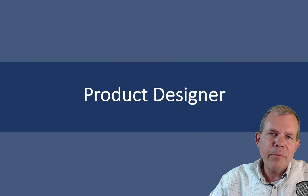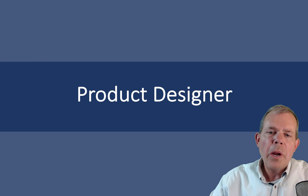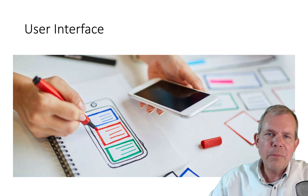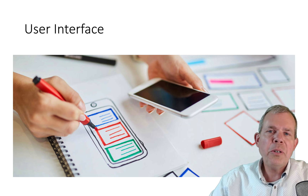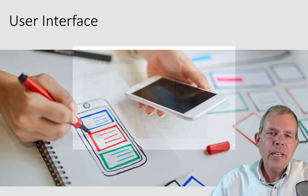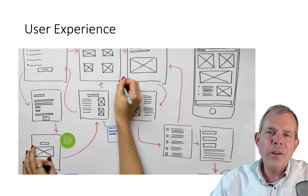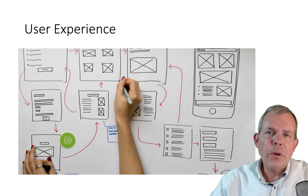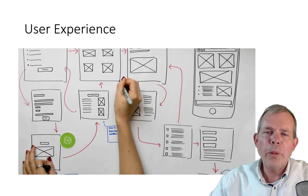Now let's take a look at the next team member: your product designer. A product designer is the person that makes your product look really good. User interface is the first thing that comes to mind — this is a person that has some artistic talent, maybe a degree in product design or fine arts. The second thing is called user experience, and there's a slight difference: user interface is what it looks like, while user experience is how a product acts and feels to the customer. Navigation is the logical flow of how you get through an app.